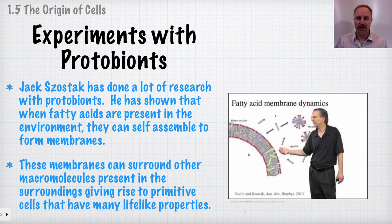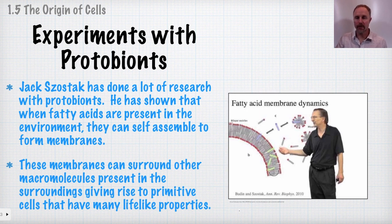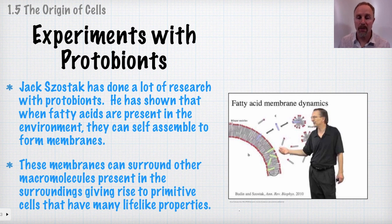Jack Szostak is a researcher who has done a lot of experiments with protobionts. He has shown that if fatty acids are present in the environment, they can self-assemble and form different structures, some of which have membranes and lipid bilayers. These membranes can surround macromolecules in the environment and give rise to structures with many lifelike properties. Over time, these protobionts would have given rise to more and more complexity, ultimately leading to what could be considered a cell.